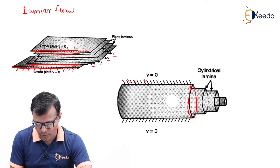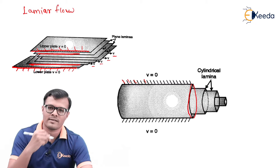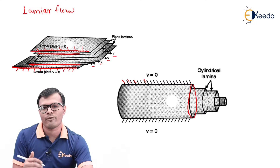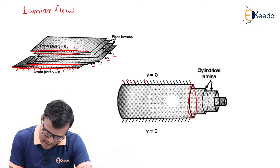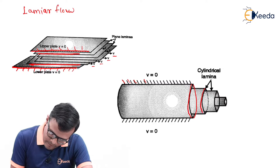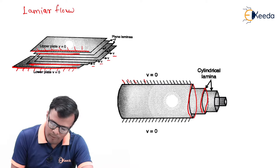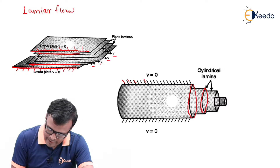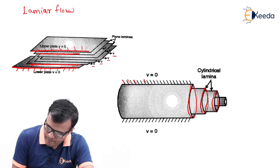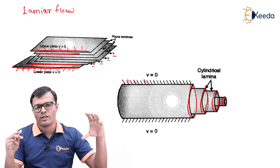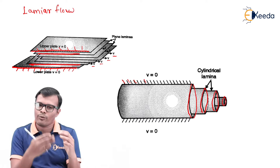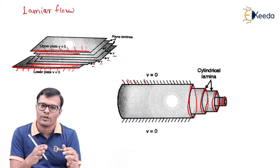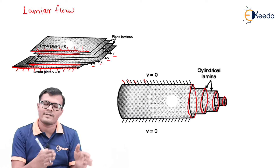If we talk about flow in a pipe, the pipe has a circular cross section, so there will be layers in a cylindrical form. There exists a first cylindrical layer, inside that another, and inside that another. All these cylindrical layers flow from one direction to another without mixing with each other in the case of pipe flow.